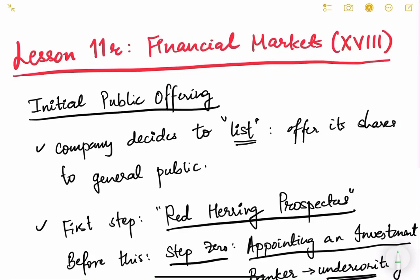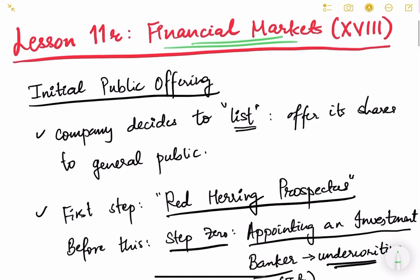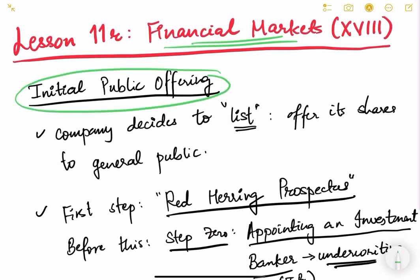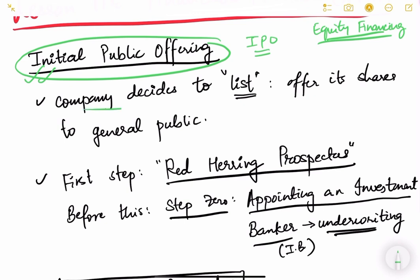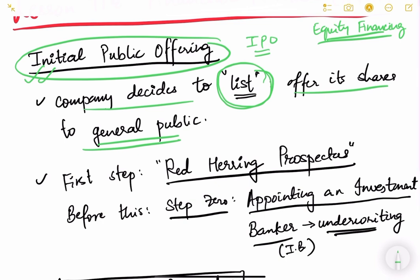Let us continue the financial markets lesson. In this particular video we will study what are the different steps involved in an initial public offering, IPO. We are studying equity financing right now, and we have already seen some basics in the previous two videos. IPO happens when a company decides to get listed and offer its shares to the general public, going from a private holding to a publicly listed company on a stock exchange.